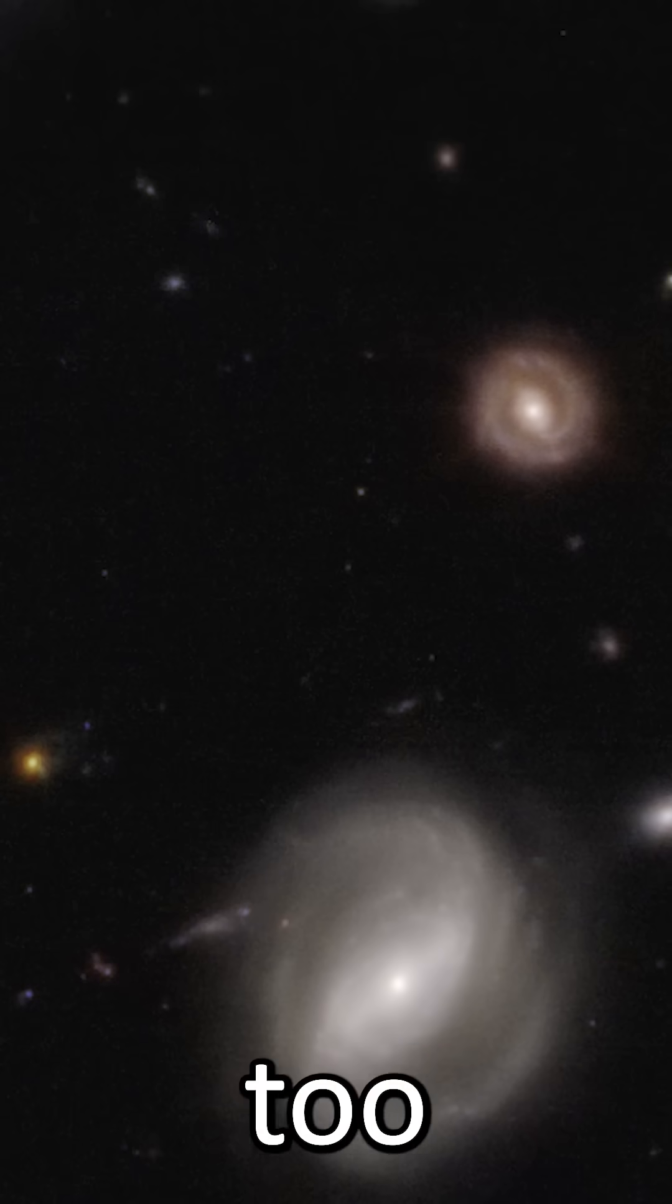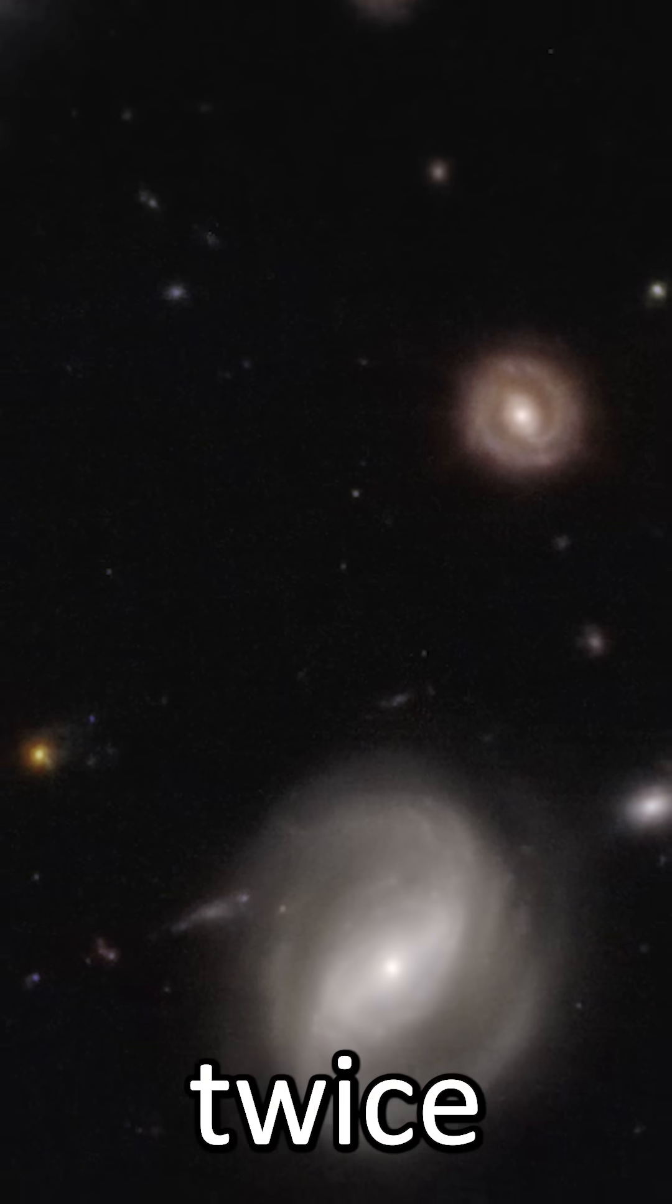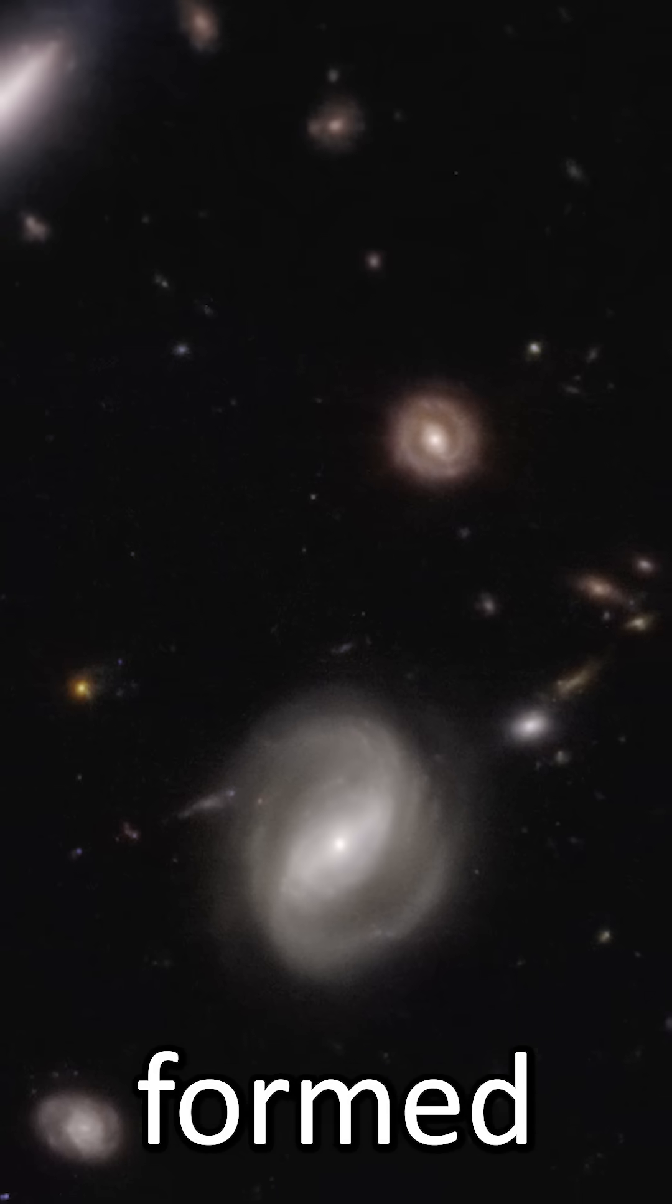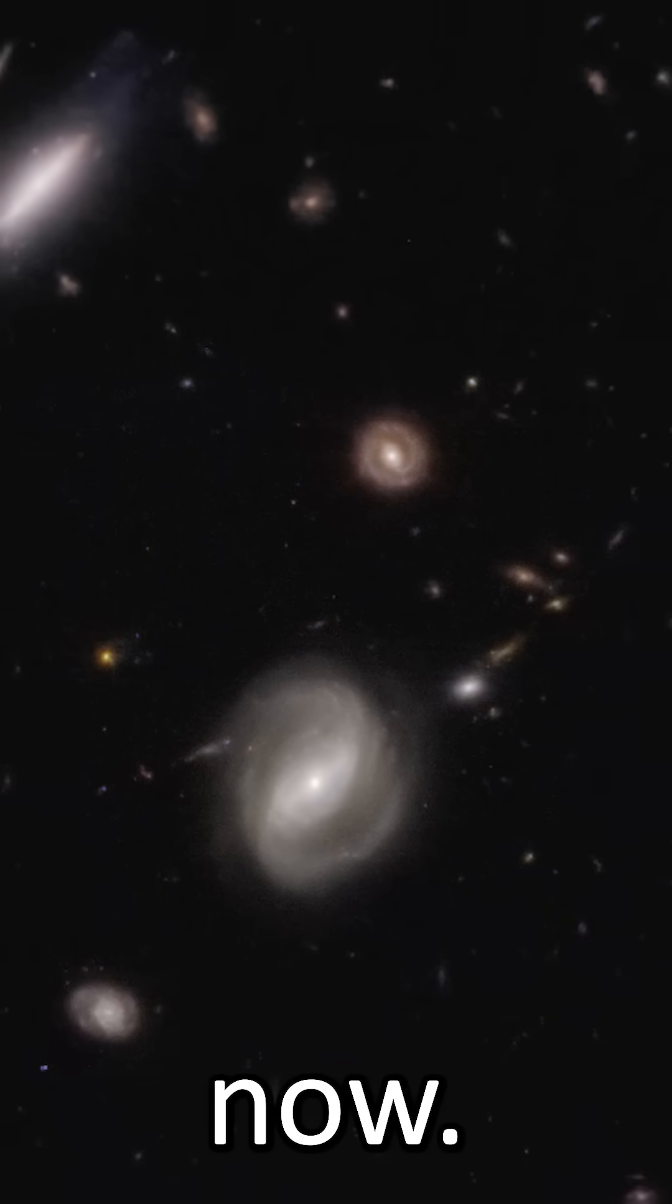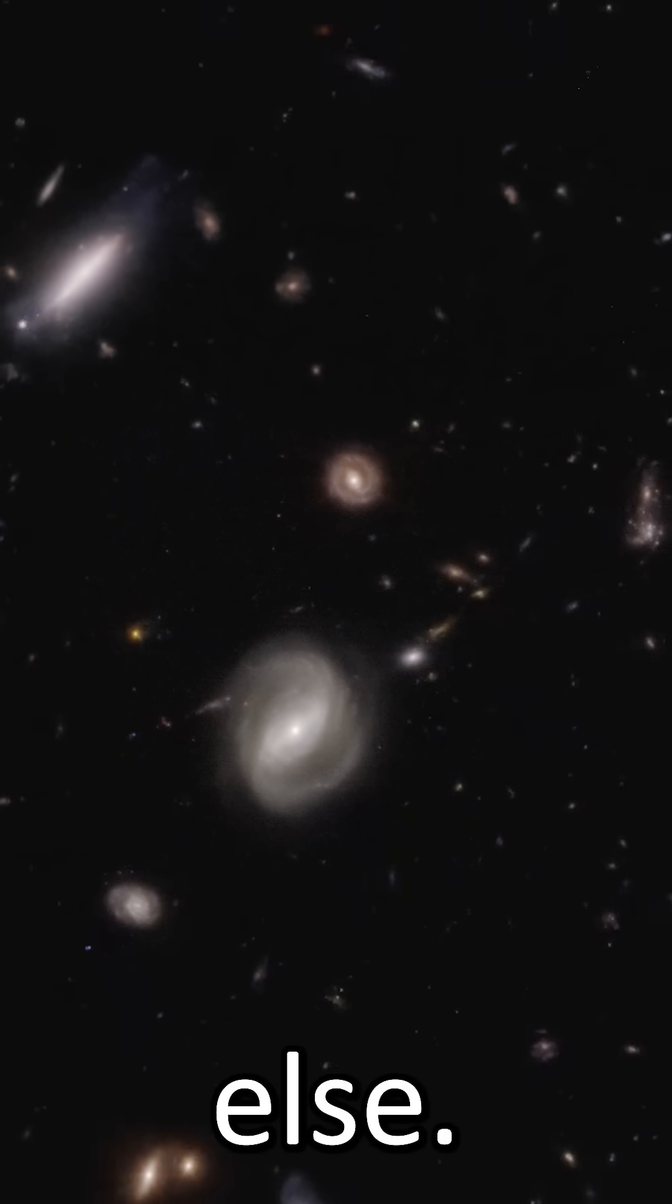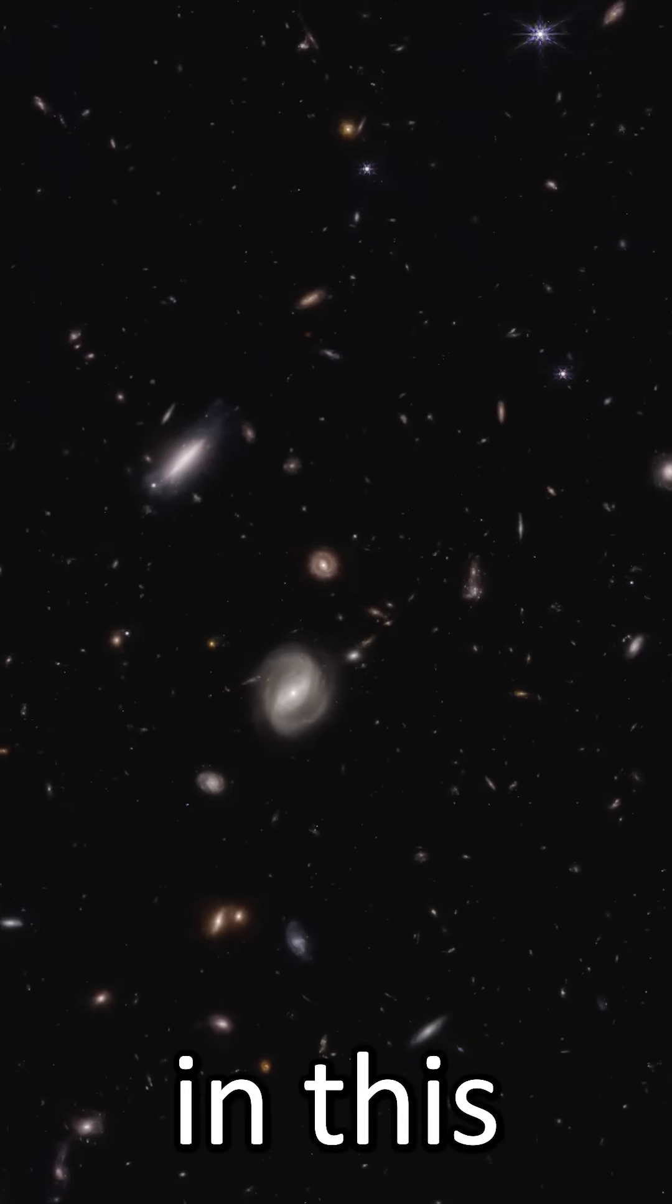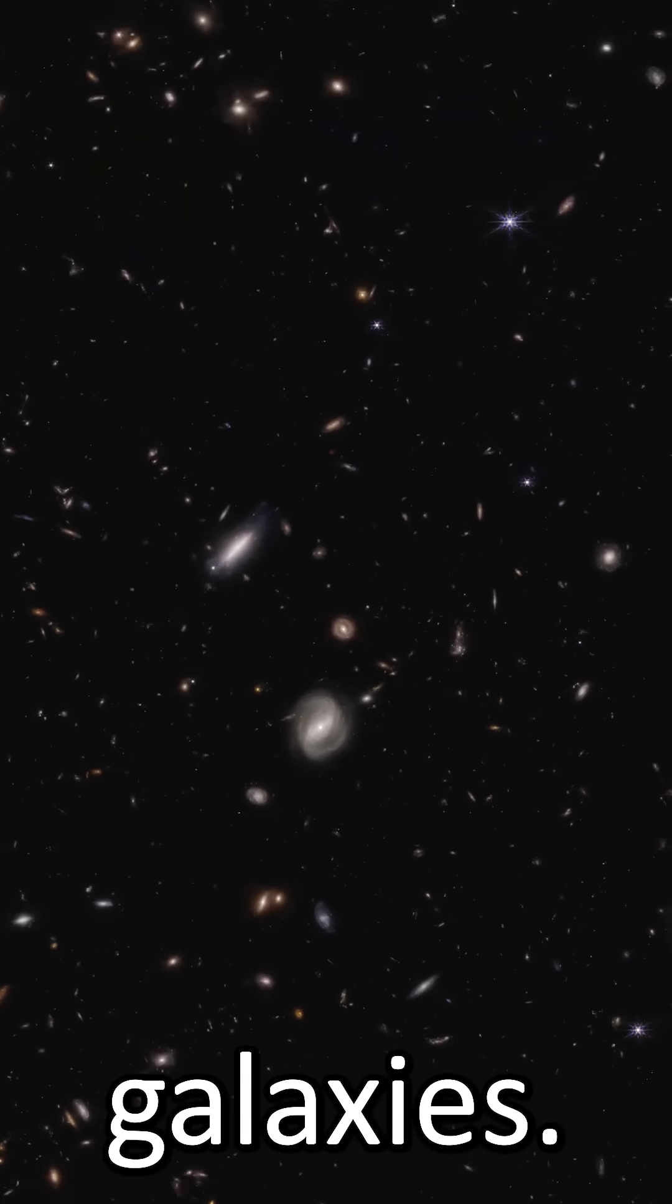There are actually still too many galaxies, about twice as many, compared to what we'd expect from the standard model of cosmology. Maybe stars formed faster in the early universe than they do now, and maybe we're missing something else. Or maybe there's brand new physics just waiting for us to discover somewhere in this image to explain all these extra galaxies.